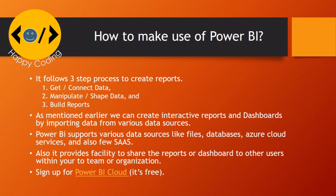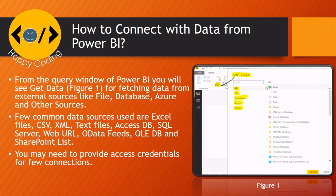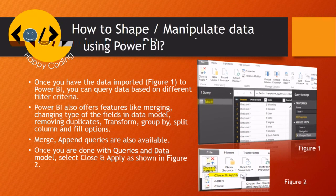How to connect with data from Power BI? From the query window of Power BI you will see Get Data for fetching data from external sources like file, database, Azure, and other sources. Few common data sources used are Excel files, CSV, XML, text files, Access DB, SQL Server, Web URL, OData feeds, OLEDB, and SharePoint list. You may need to provide access credentials for few connections.